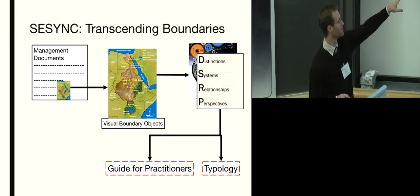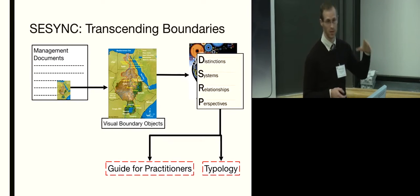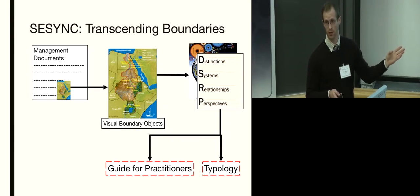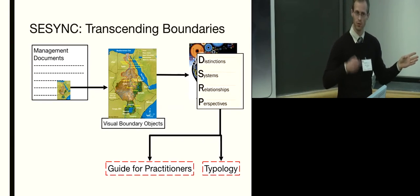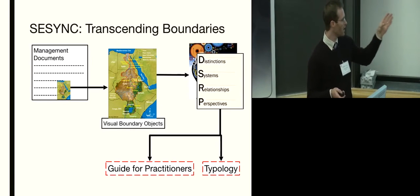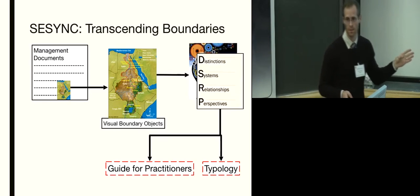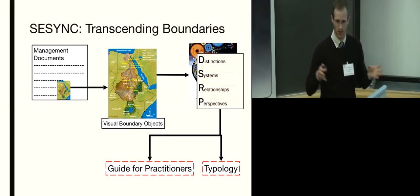We decided to use systems thinking, the DSRP framework, as a way to evaluate what types of information was contained in these different visual boundary objects. What distinctions is a map making? What systems does it convey? What relationships? What is the perspective of the person producing this? We're trying to create a typology of how we're currently using boundary objects. And then, how do we use systems thinking as a way to build better boundary objects to better represent the socially negotiated information that we have, that we want to convey, and how they connect to the public and other people's mental models? Systems thinking is a way to understand that and improve it.